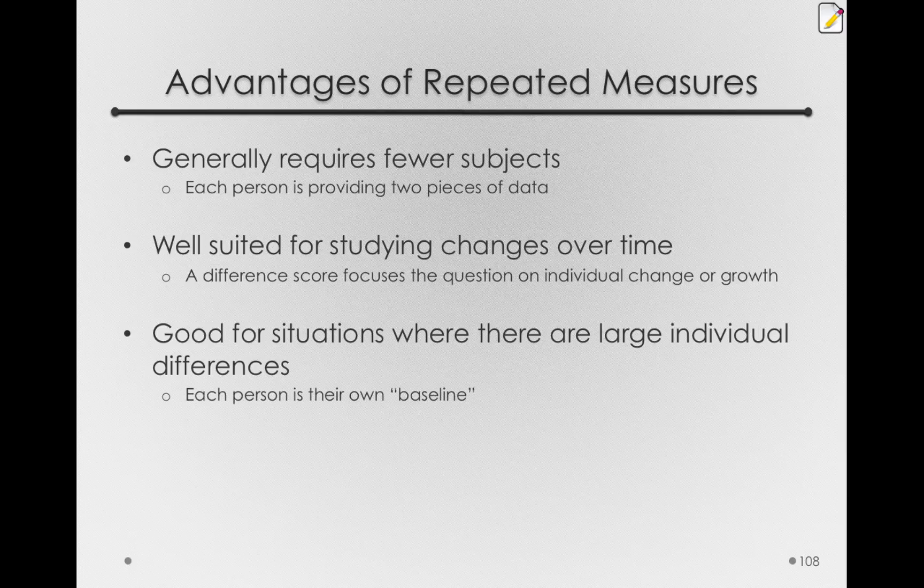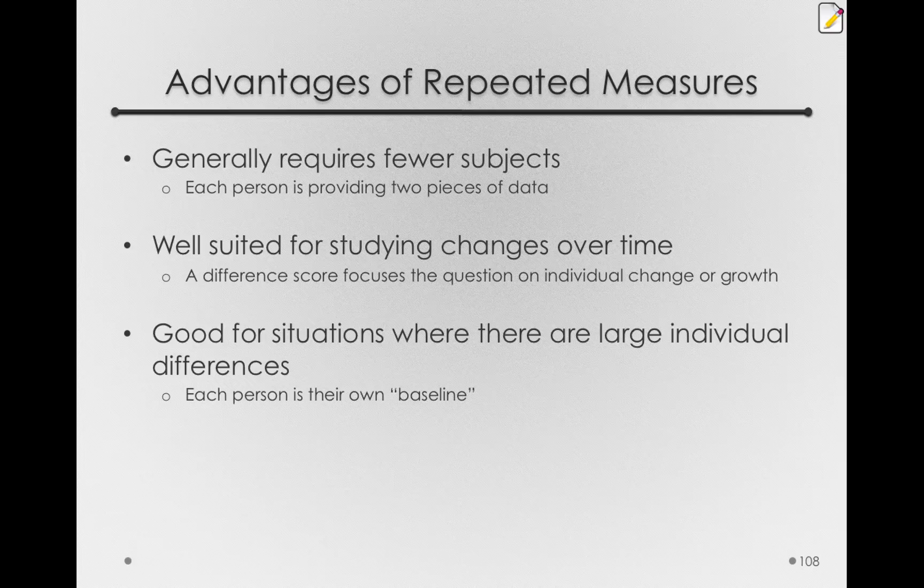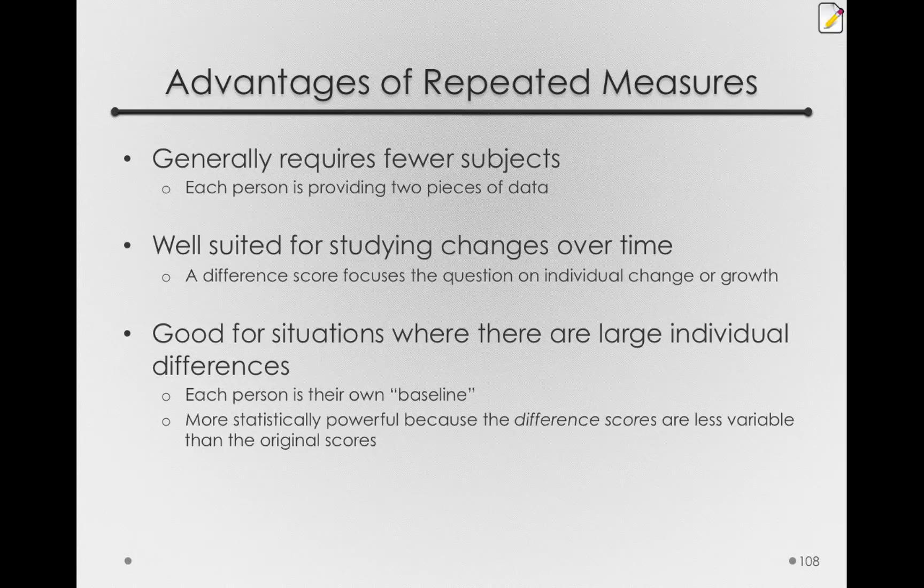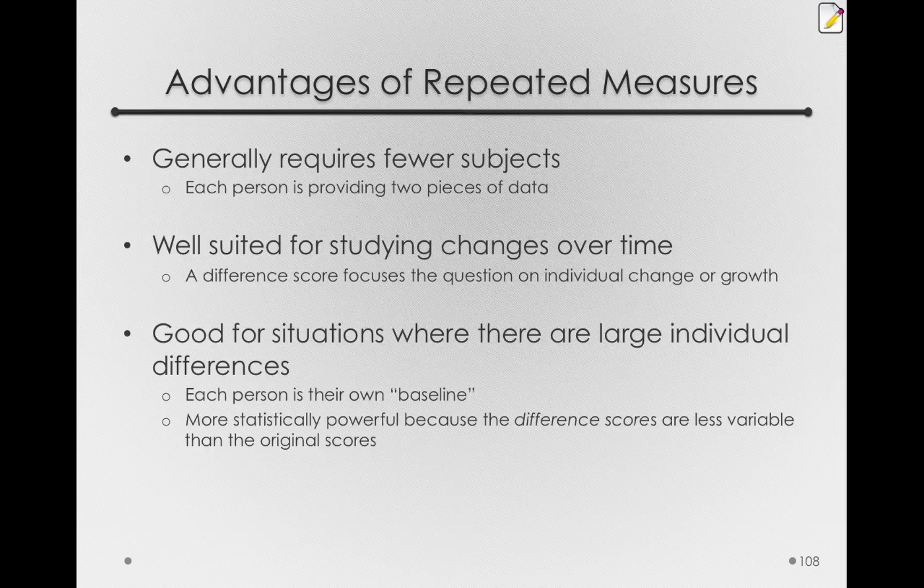And so, the difference score we're taking is really factoring out or partialing out the effect of where an individual starts. So, we get a more statistically powerful test because the difference scores are less variable than the original scores. Let's actually look at this.